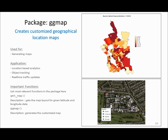In the second ggmap example, you can see the real-time position of four people. Using GPS location data you can actually plot the position of objects over a map.